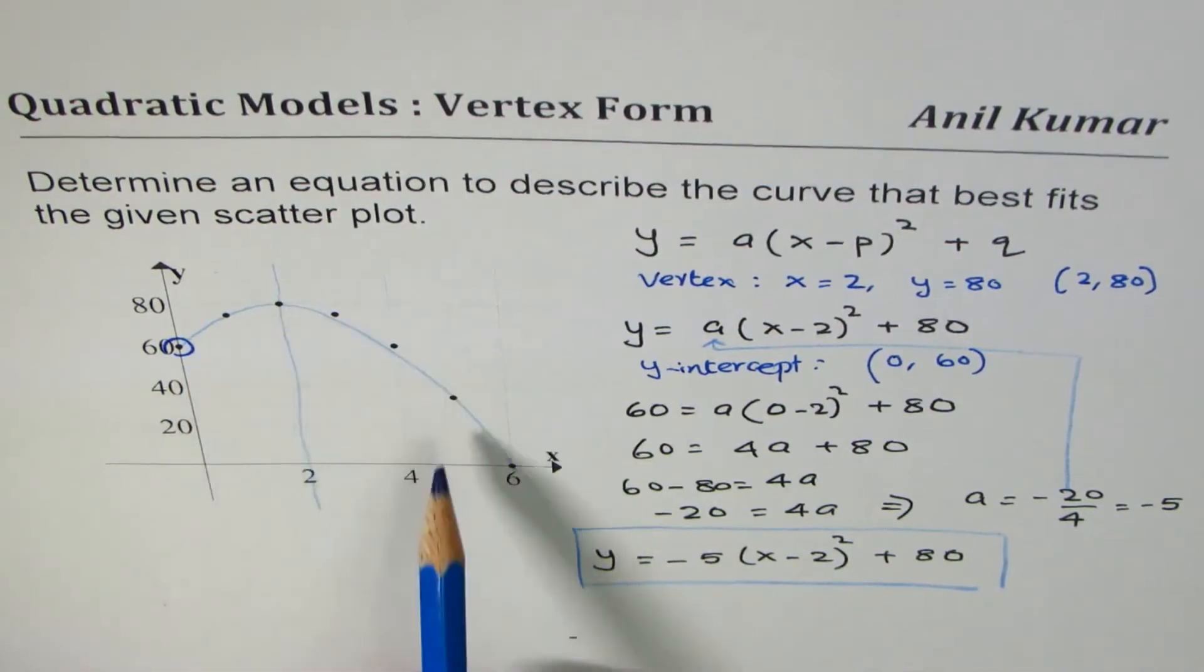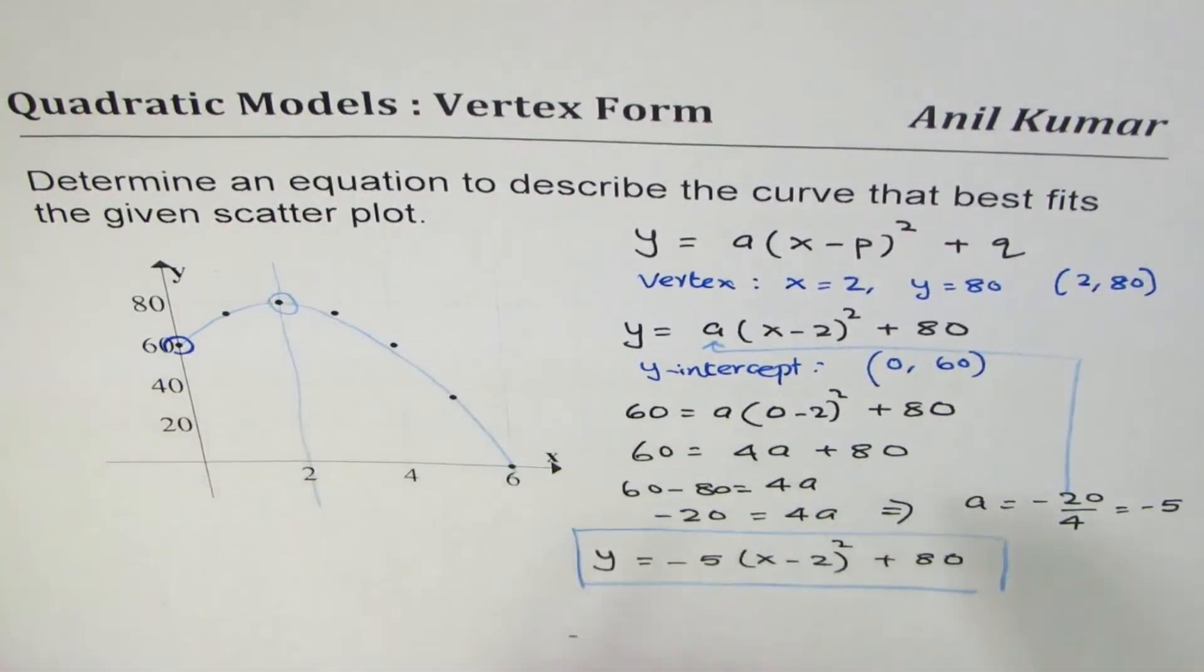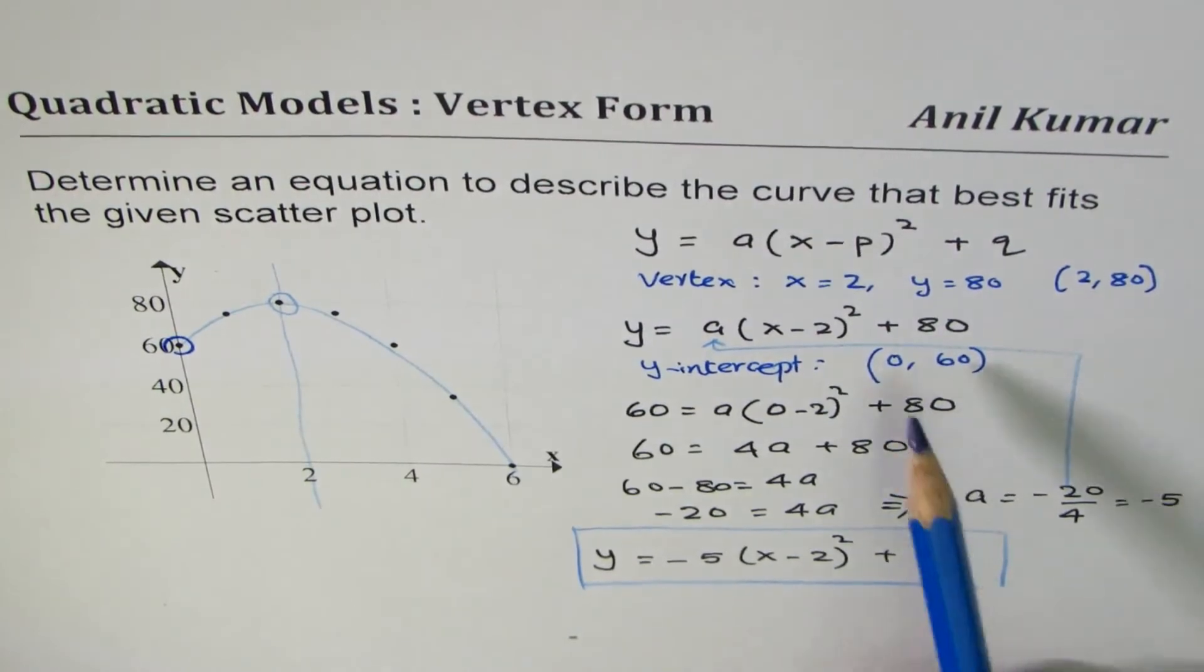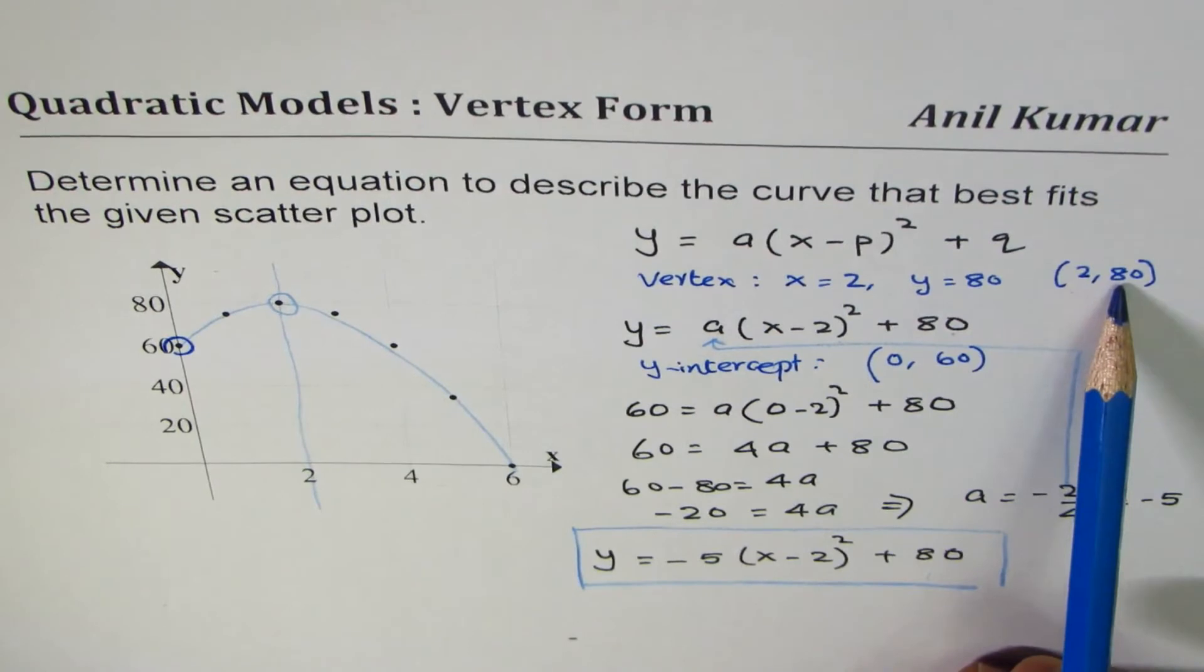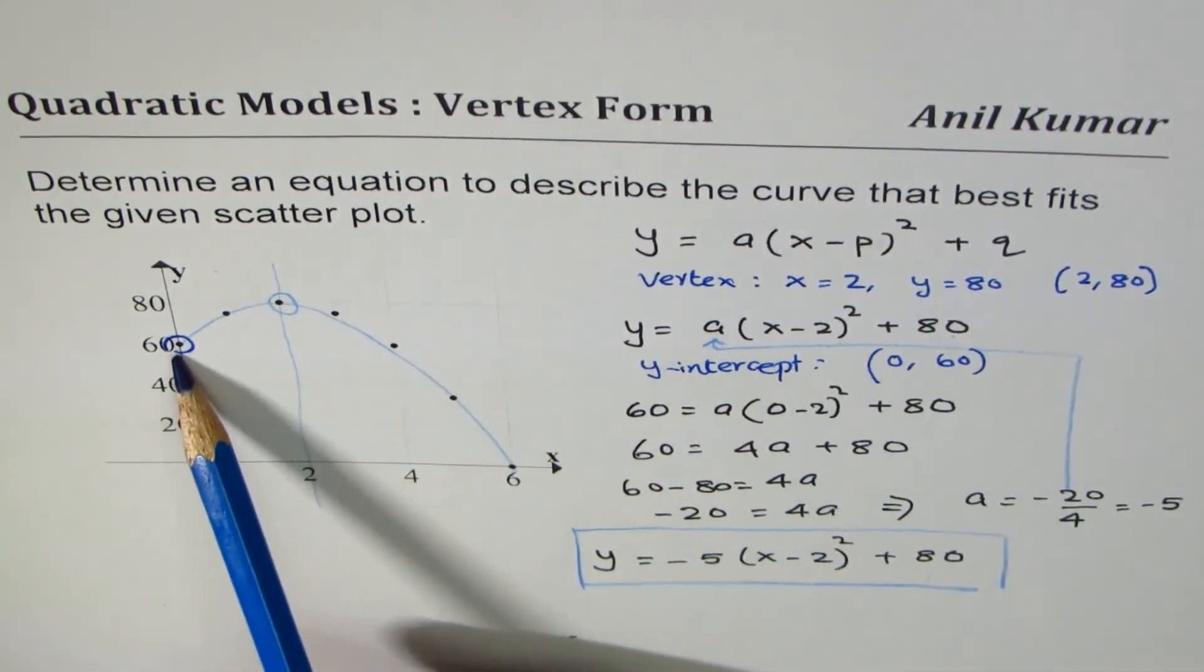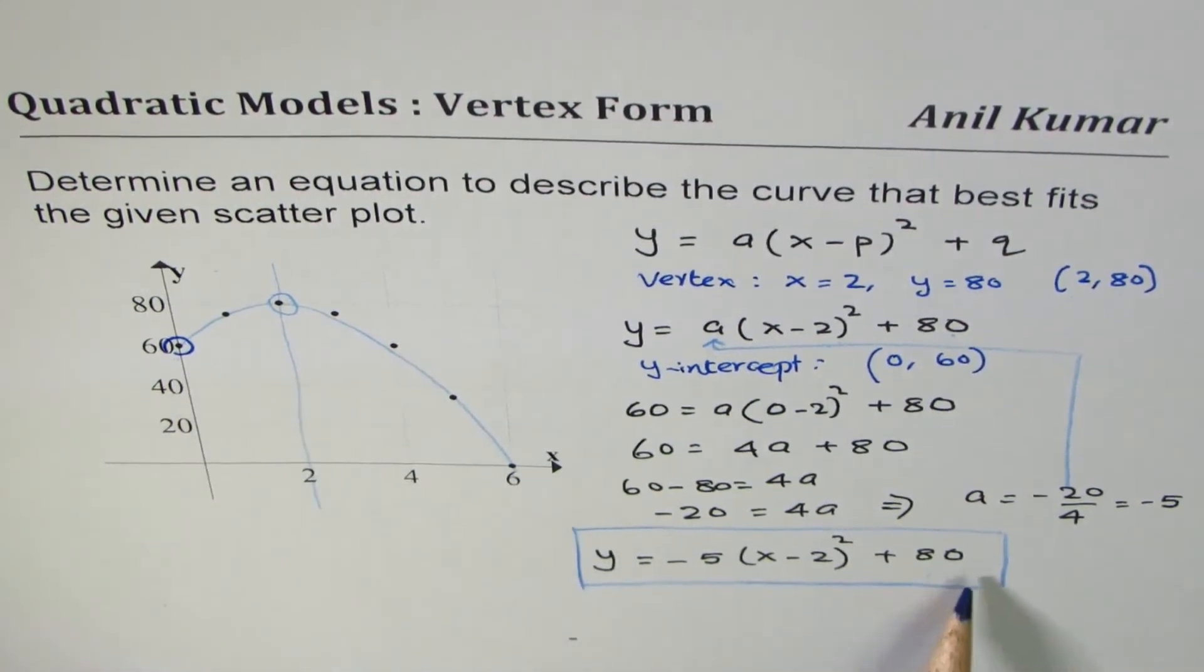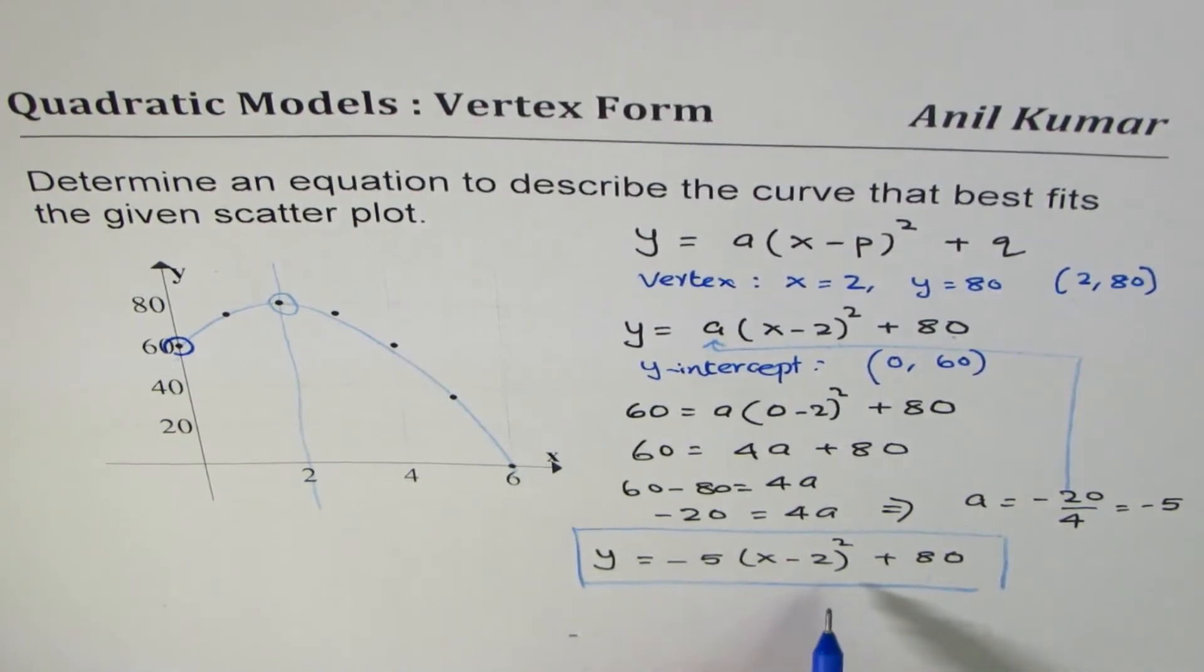So we have a scatter plot here. We utilize the vertex and the y-intercept to write equation first in general form using the vertex which is at (2, 80). And then to find the value of a, we use the y-intercept and found the value of a as minus 5, giving us the answer as y equals to minus 5(x minus 2) whole square plus 80.